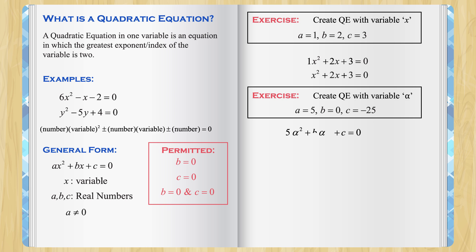a is 5 and b is 0 and c is negative 25. 0 times alpha is 0. So, that disappears. And we have 5 alpha squared minus 25 equal to 0.